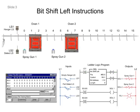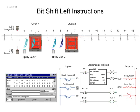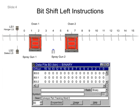An example of the BitShiftLeft instruction includes tracking parts for a spray painting application. Positions 0 through 15 of the paint line match the length of the word in the BitShiftLeft instruction.